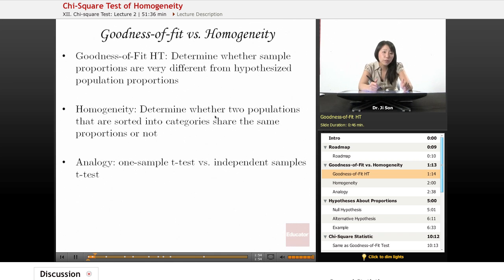In tests of homogeneity, homogeneous means similar, that they're made up of the same stuff. In tests of homogeneity, we want to determine whether two populations that are sorted into categories share the same proportions or not.